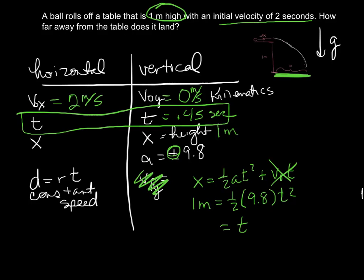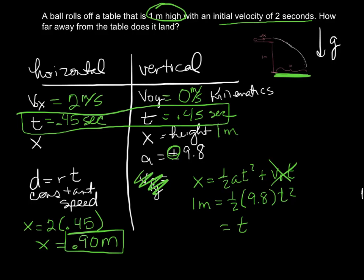That 0.45 seconds is also the time it takes to travel horizontally, since time is shared between both sides. Using distance equals rate times time: x = 2 × 0.45, so the ball lands 0.9 meters from the edge of the table. Even though we were looking for horizontal distance, we had to use vertical information to get enough to solve it.